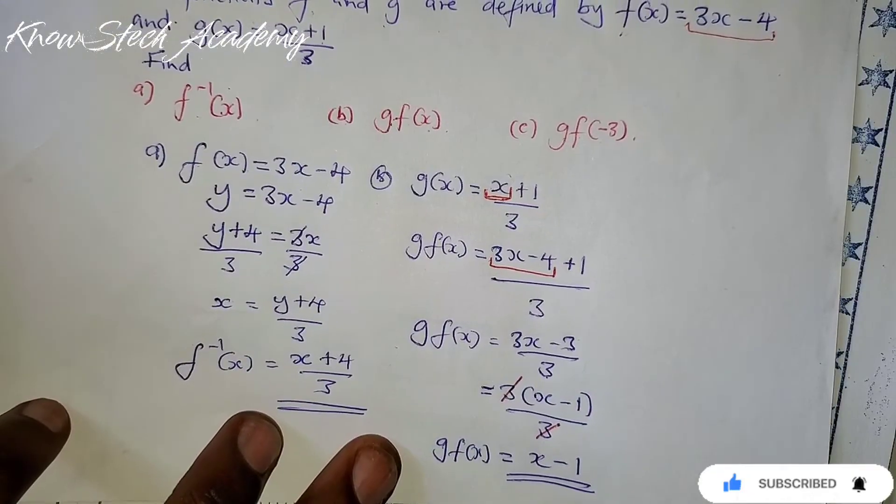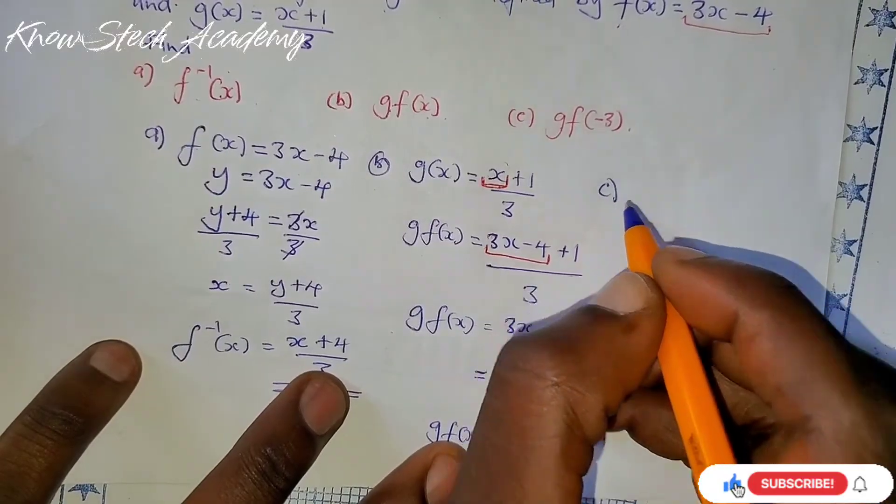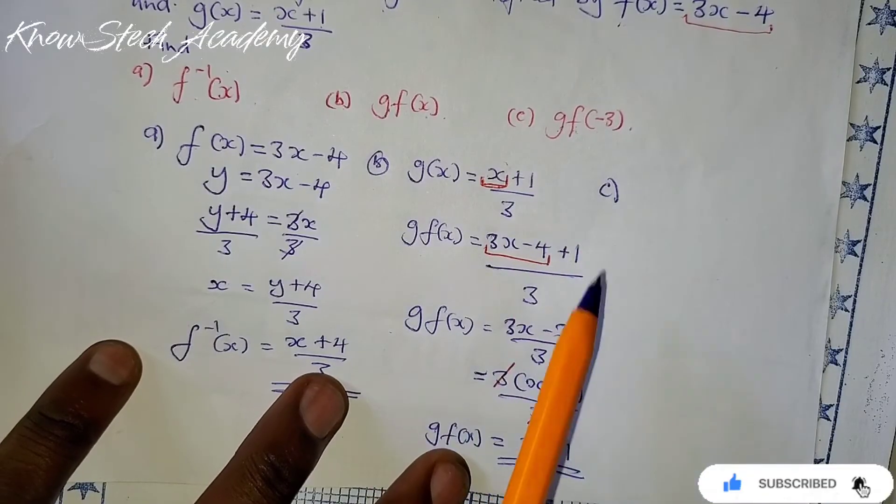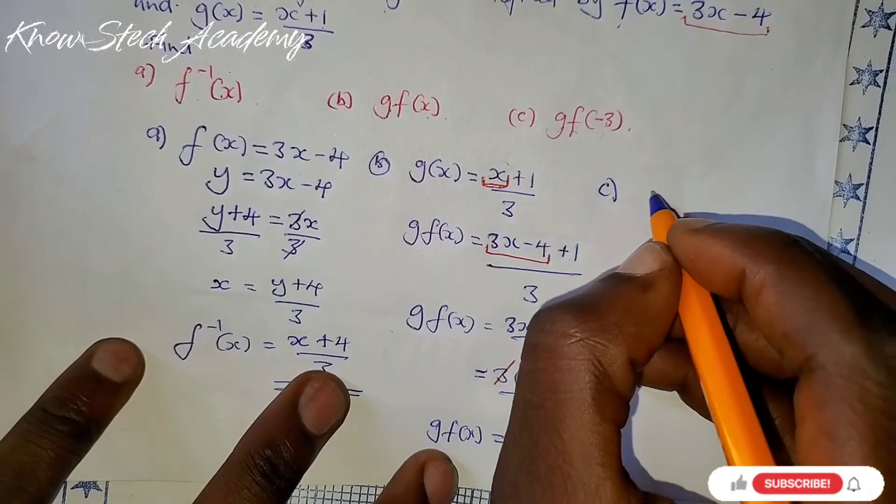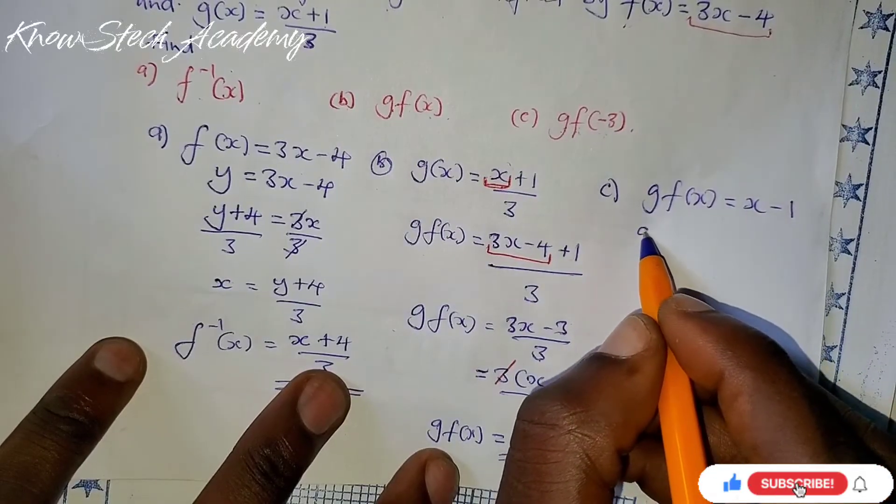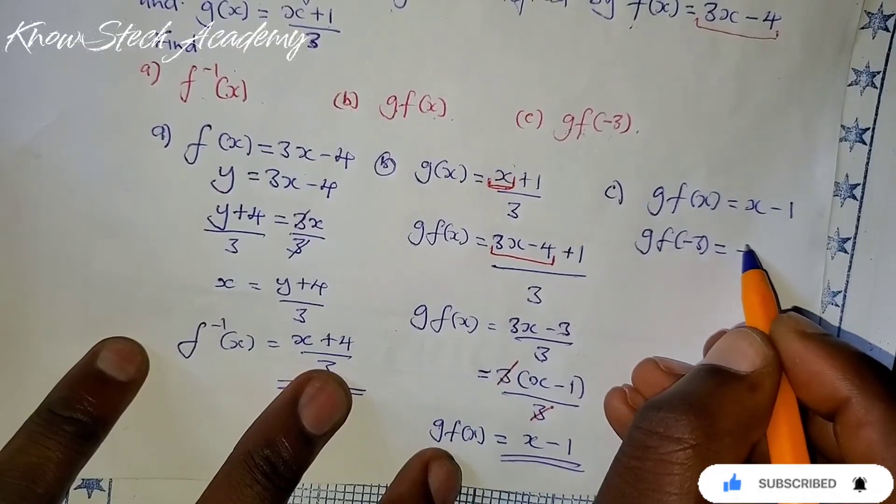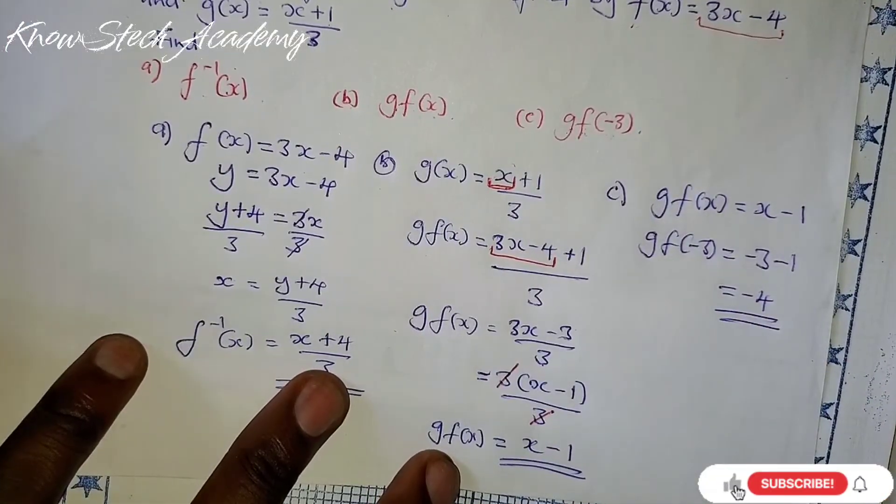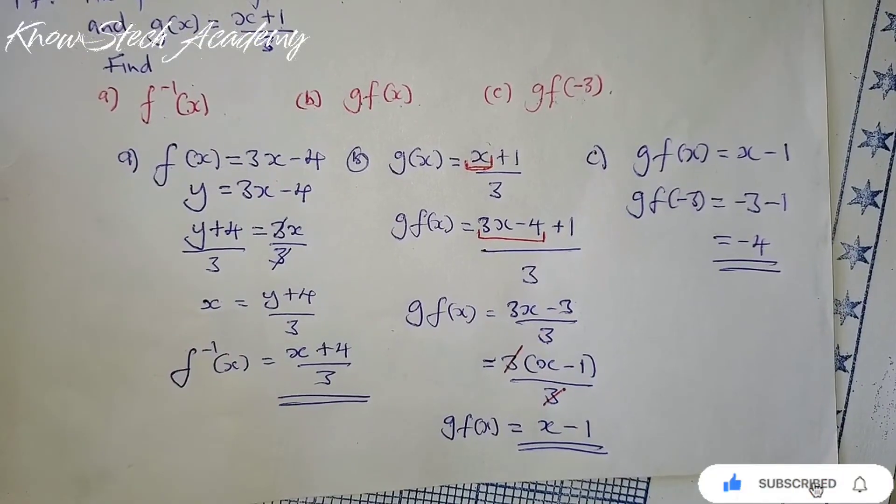Now look at the last question they are asking us to find. C. They are saying in the gf function, where there is x substitute negative 3. So gf(x) = x - 1. They are asking us where there is x substitute with negative 3. So here we are going to substitute with negative 3 minus 1 and the answer is just negative 4. Simple as this.